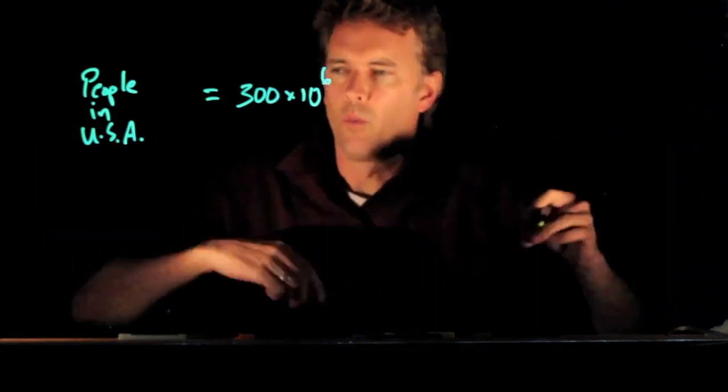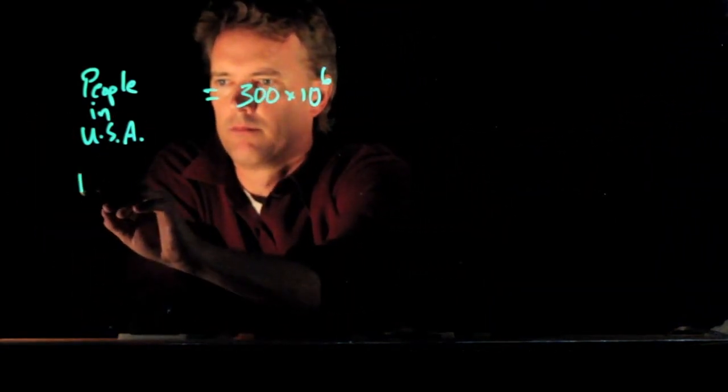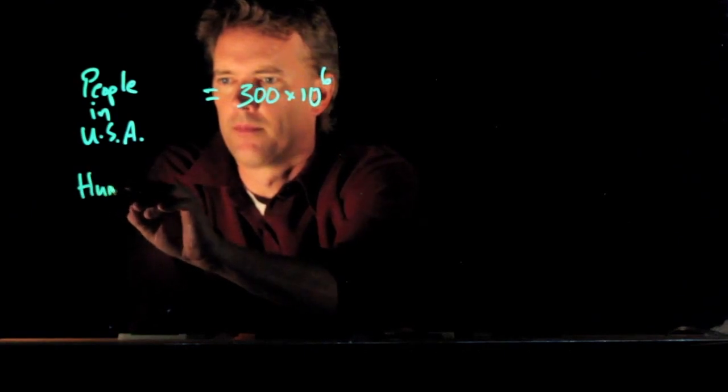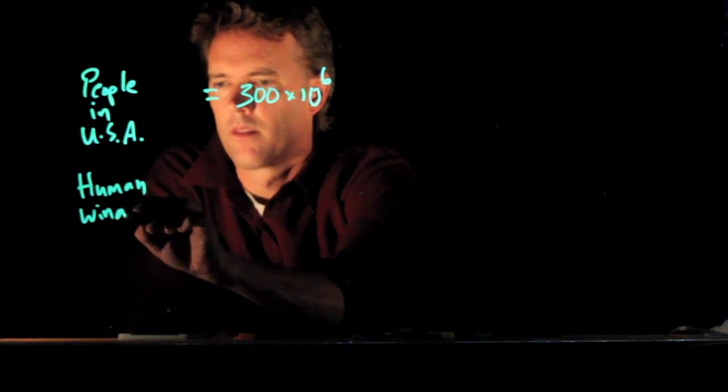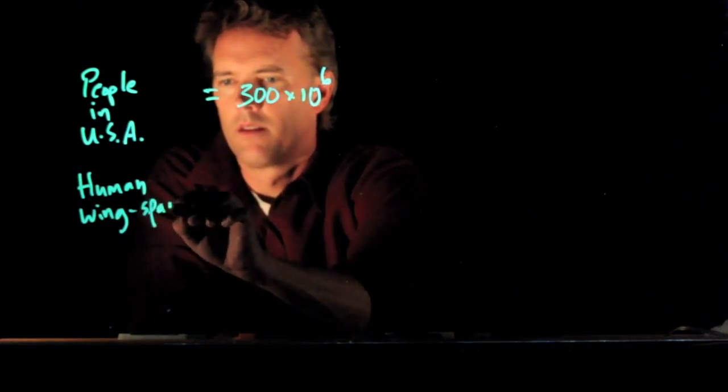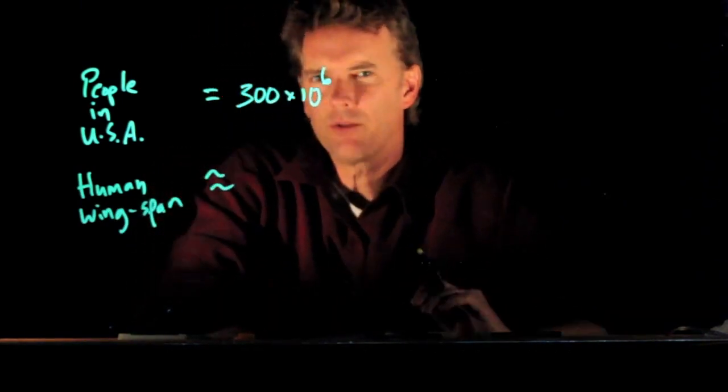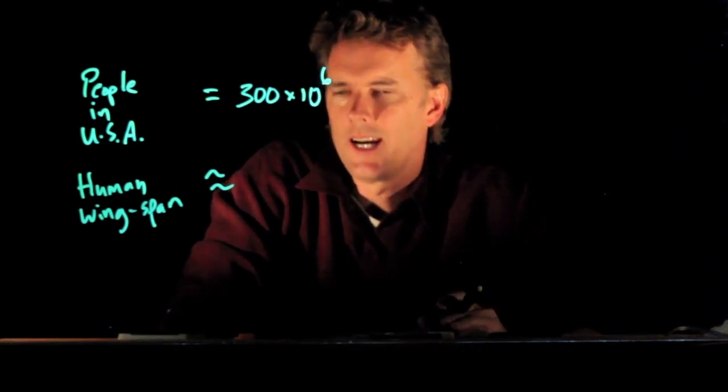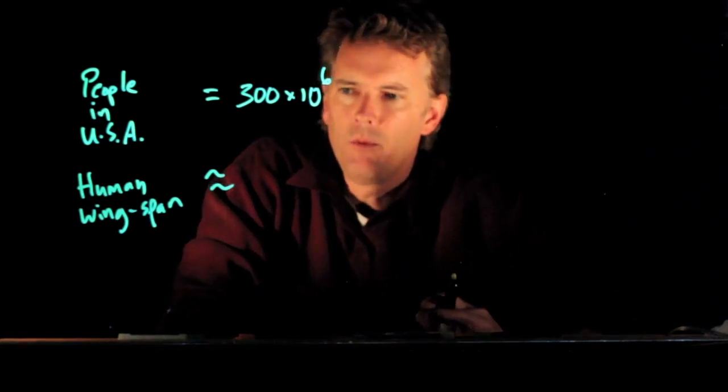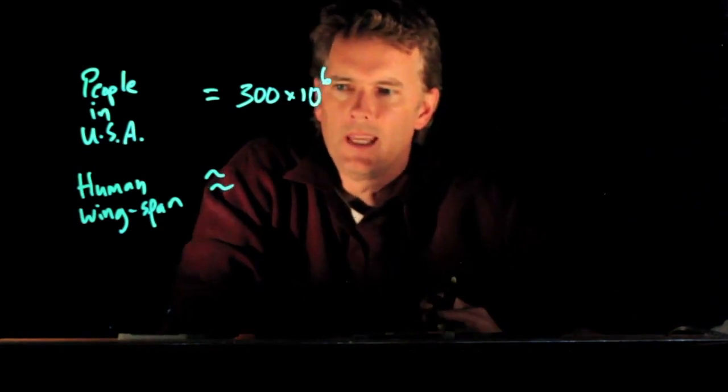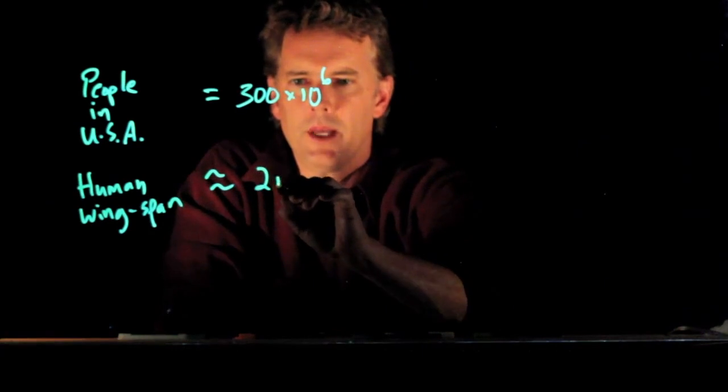How big is the wingspan of a typical human? Right, hand-to-hand. It's about the same as your height, and average height is probably five to six feet. So why don't we say that the wingspan is two meters.